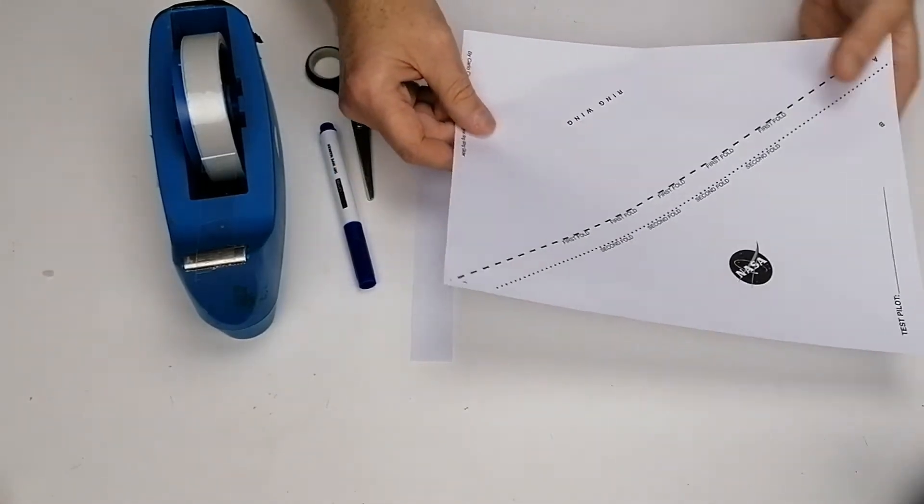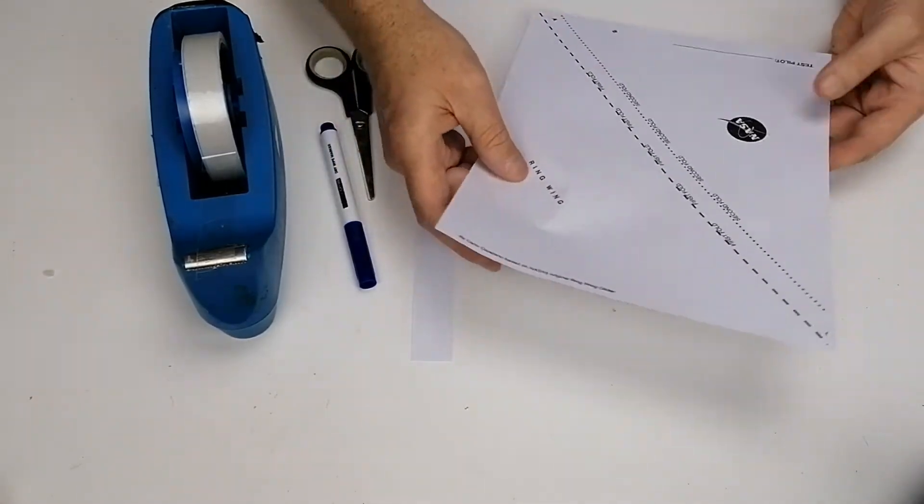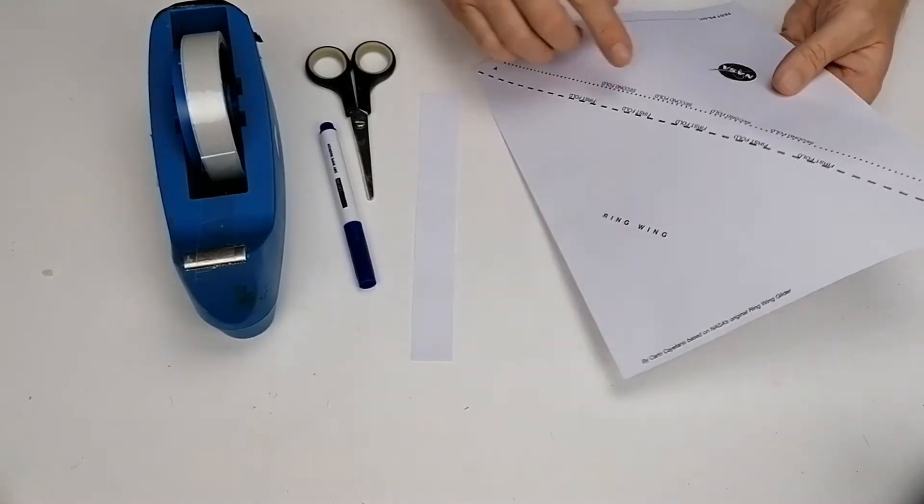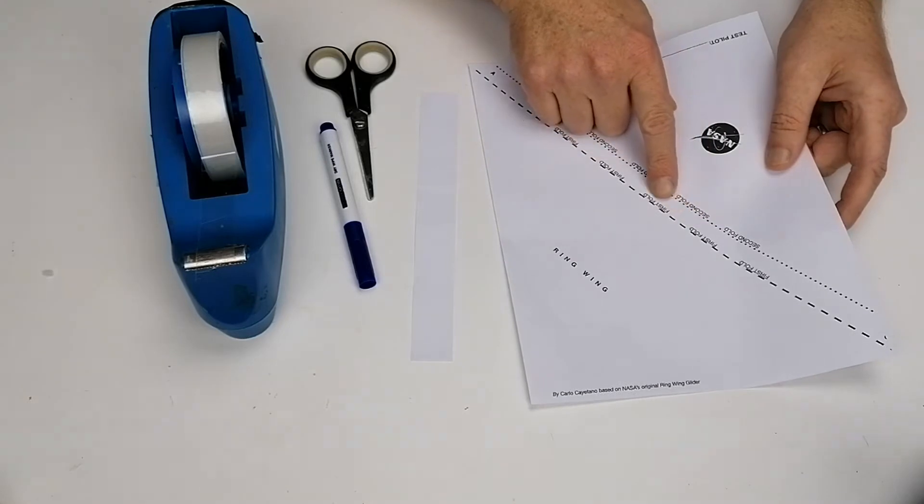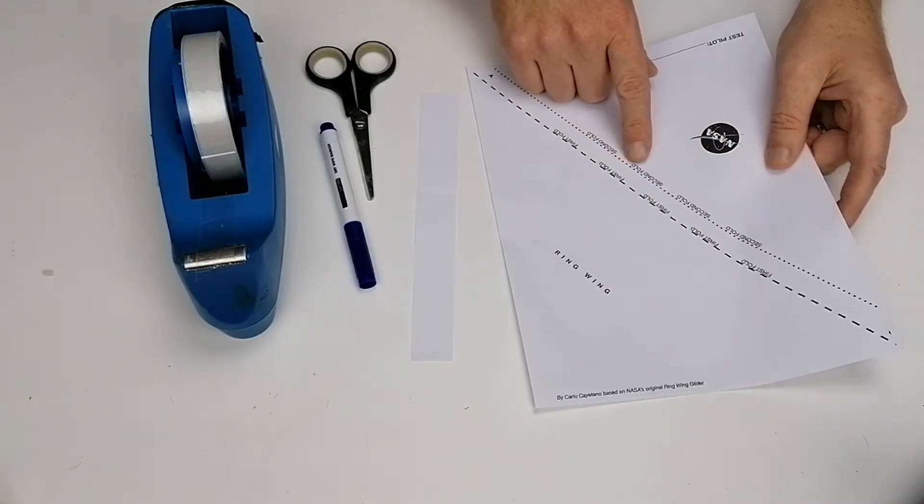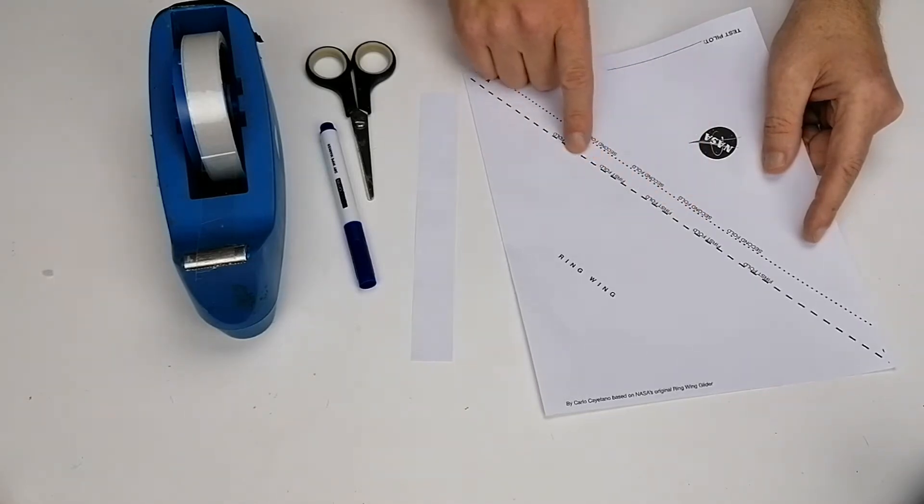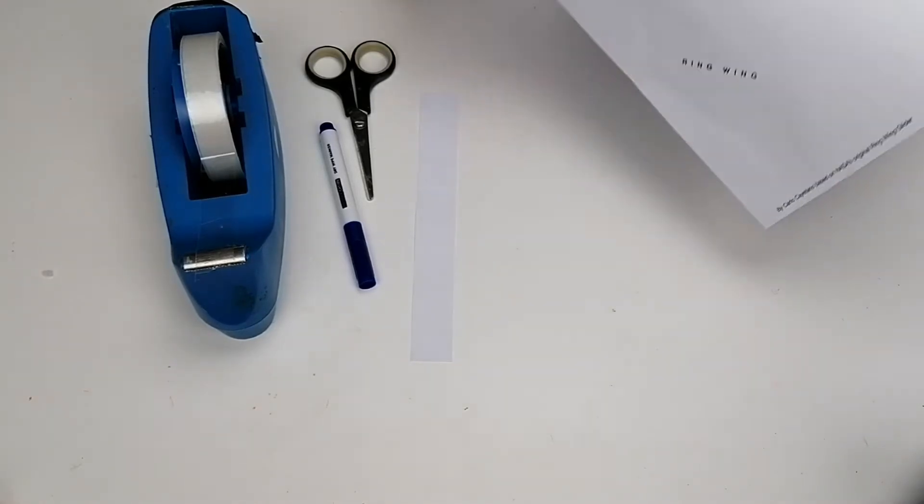The template is nicely done because it has the folds on it, so it makes it easy to do. It says first fold here, and then second fold is here. So this is a dashed line here and a dotted line here for the second fold.